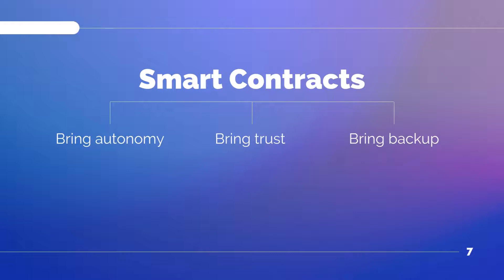The benefits of smart contracts are many, but we're going to consider just six of them. Smart contracts bring autonomy, meaning you are the only one making the decisions and do not require a middleman of any kind. Smart contracts also bring trust. Your documents are shared on a shared ledger and encrypted, which means they can never be misplaced. Trust is advocated with smart contracts.